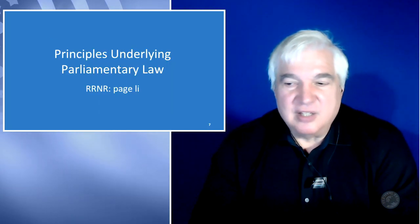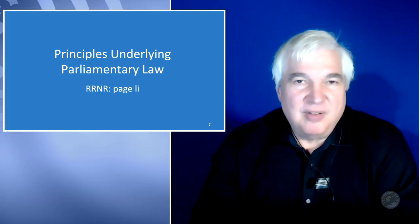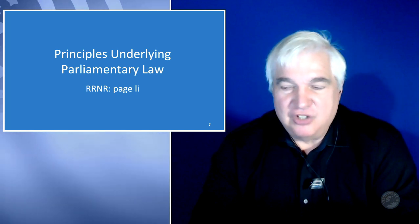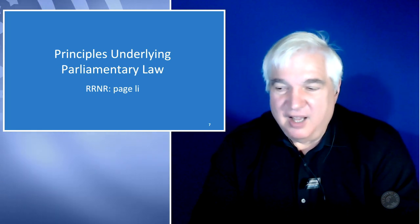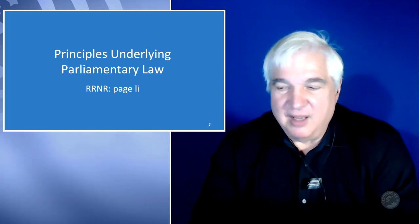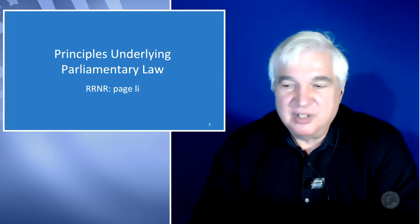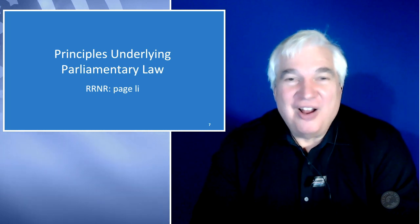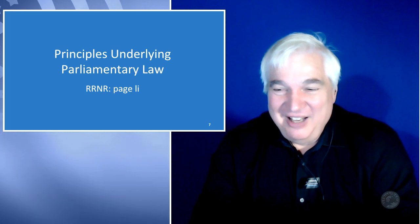This segment is on the principles underlying parliamentary law, which is documented in Robert's Rules of Order, 11th edition, on page LI — which is page 51. For some reason, the preface of the book is numbered with Roman numerals. It harkens to our long history — something historical.